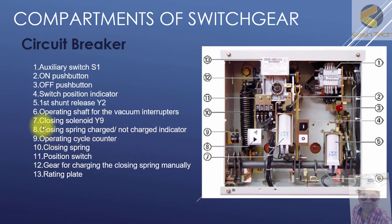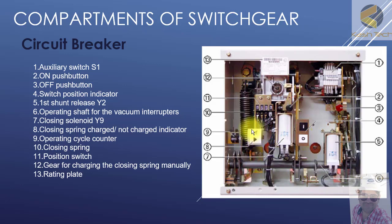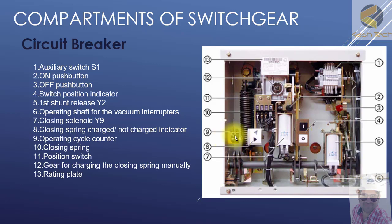Number seven is the closing coil Y9. Number eight is the closing spring charge or not-charged indicator — you can see this indicator marking whether the spring is charged or not. Number nine is the operating cycle counter, which shows how many times the breaker has been operated.